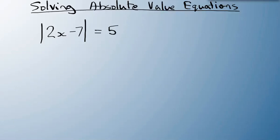We have to look at when the answer is positive, so 2x minus 7 equals 5. But we also have to look at when the answer might be negative. So we would go negative 2x minus 7 equals 5.